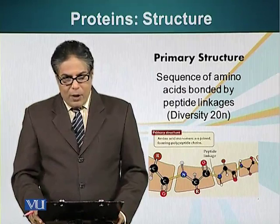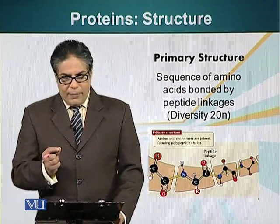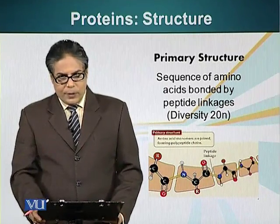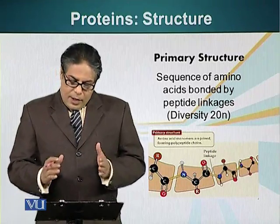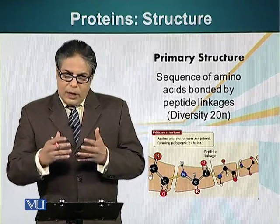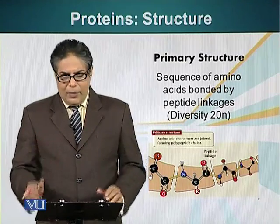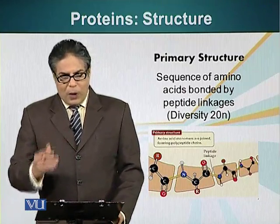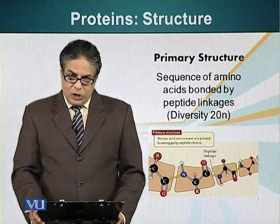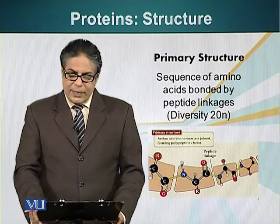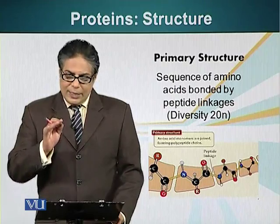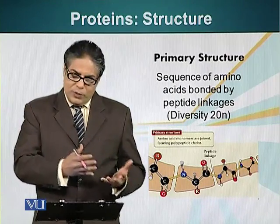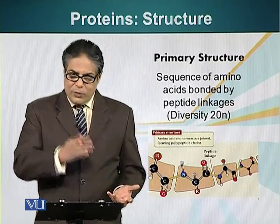N is the number of amino acids present in a protein. So if we are talking about just two amino acids, it will be 20 to the power of 2, which is 400. If we are talking about a medium-sized protein, say 100 amino acids long, it will be 20 to the power of 100. This is a very large number — in fact, this number is so large that we don't have enough electrons in this universe. The number of electrons in this universe is less than 20 to the power of 100.